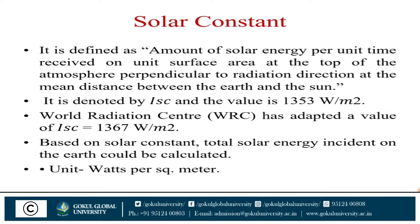Next, what is the solar constant? It is defined as the amount of solar energy per unit time received on a unit surface area at the top of the atmosphere, perpendicular to the radiation direction, at the mean distance between the Earth and the Sun. It is denoted by I_sc, where sc means solar constant, and its value is 1353 watts per meter square. The World Radiation Center has adopted a value of solar constant equal to 1367 watts per meter square. Based on the solar constant, the total solar energy incident on the Earth can be calculated; the unit is watts per meter square.